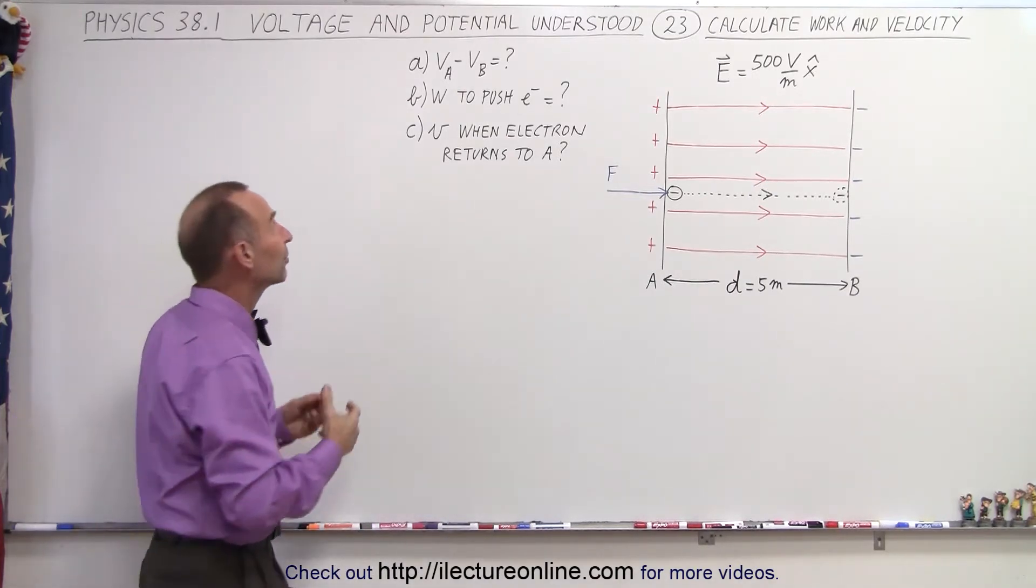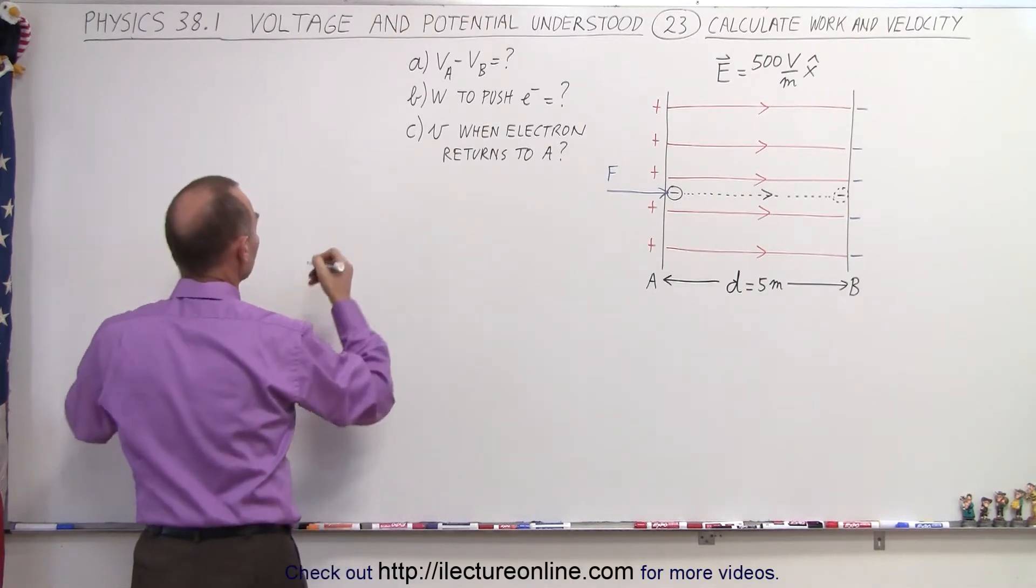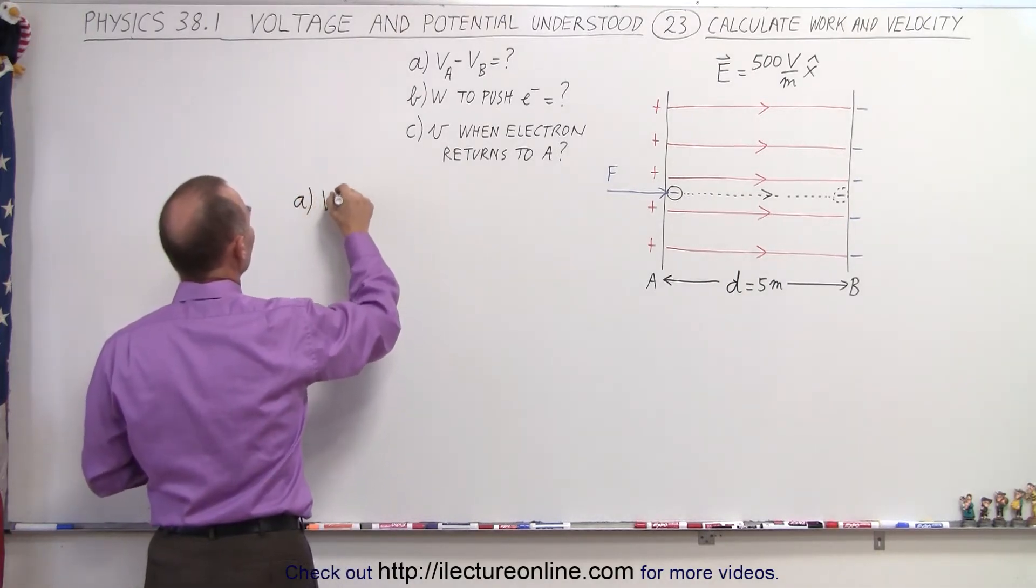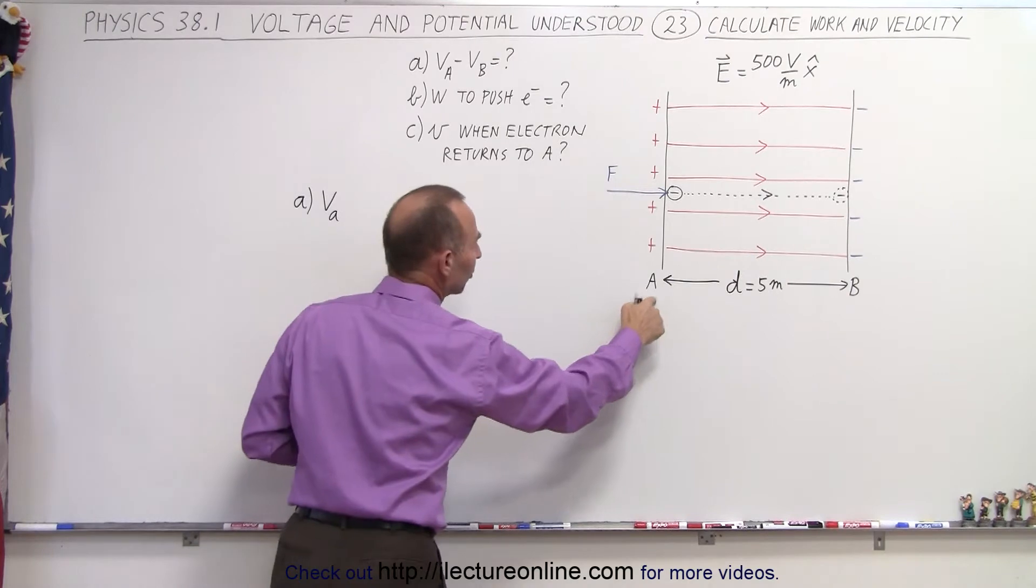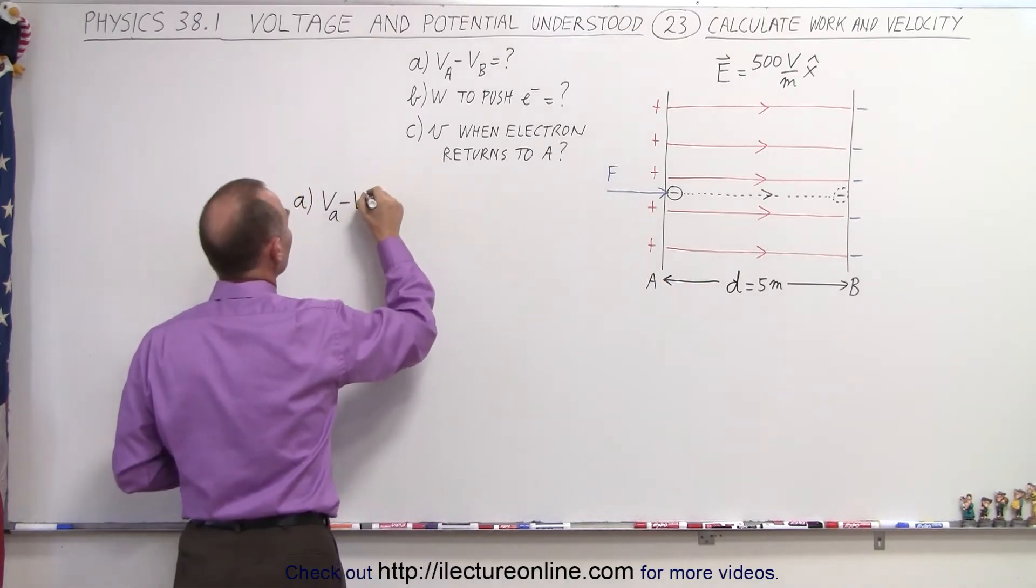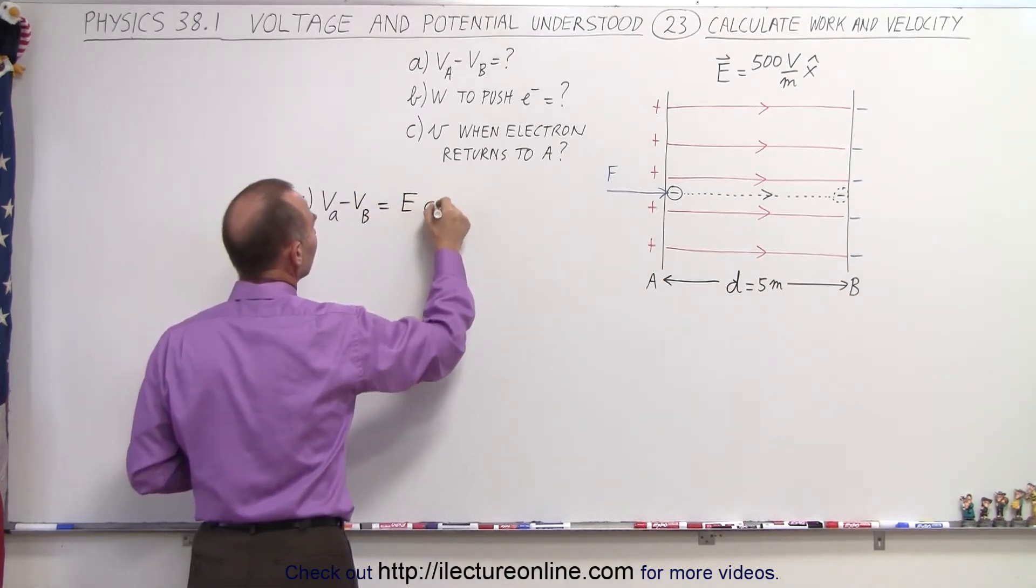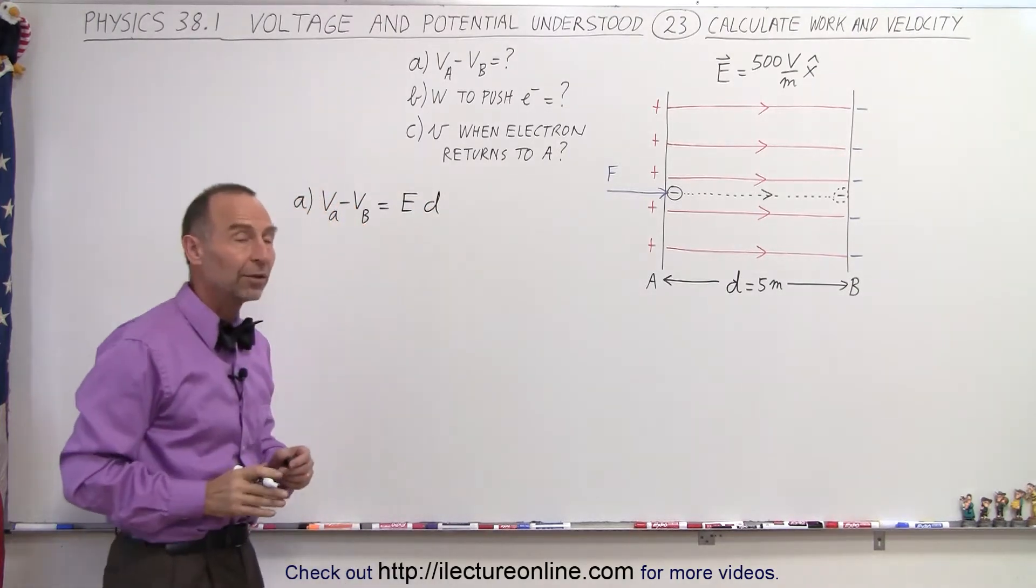So the first thing we're going to do is calculate the difference in potential. So for part A, Va, which will be at a higher potential than Vb, minus Vb is going to be equal to the strength of the electric field times the distance between the plates.